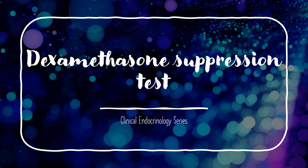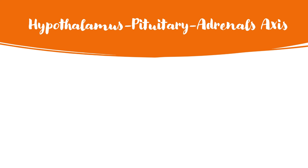To understand this test entirely, we first of all have to understand the hypothalamus-pituitary-adrenal axis. We start off with the hypothalamus, and this secretes a substance called corticotropin-releasing hormone, or CRH. The CRH then acts on the anterior pituitary gland, triggering it to release ACTH.